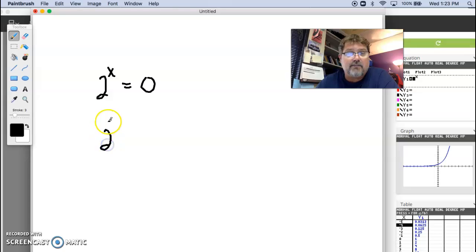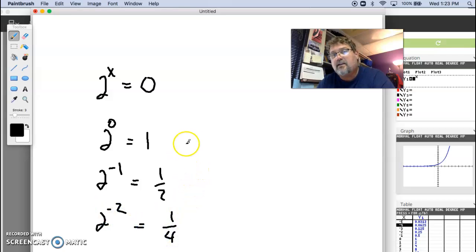2 to the, now if we start getting negative exponents, or even a 0 exponent, that gives us a 1, and 2^(-1) is 1/2, and you'll see that the whole, the progression just keeps getting smaller, but does it get to 0? And the fact is, it doesn't.